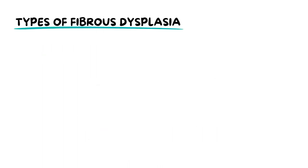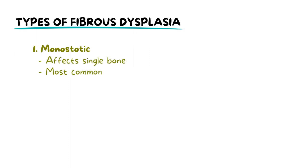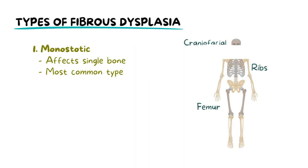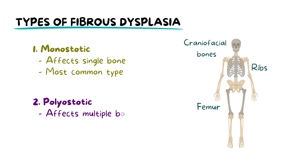Fibrous dysplasia presents in various forms based on the number and location of the bones affected. The monostotic type affects a single bone and represents the majority of cases, commonly involving the ribs, femur or craniofacial bones. In contrast, the polystotic type affects multiple bones and is often diagnosed in childhood, typically presenting in an asymmetrical pattern.